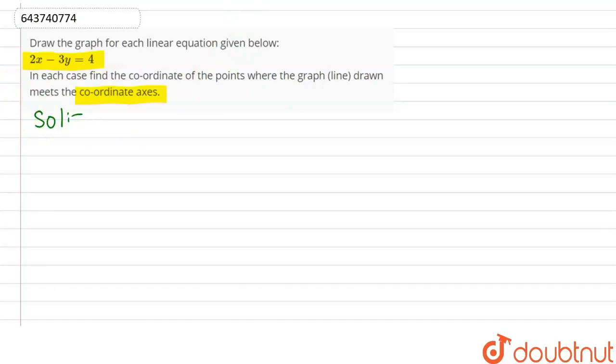So firstly, we have to make the graph and show this line in the graph. Let's say this is the point x, this is y axis, and now represent this line.